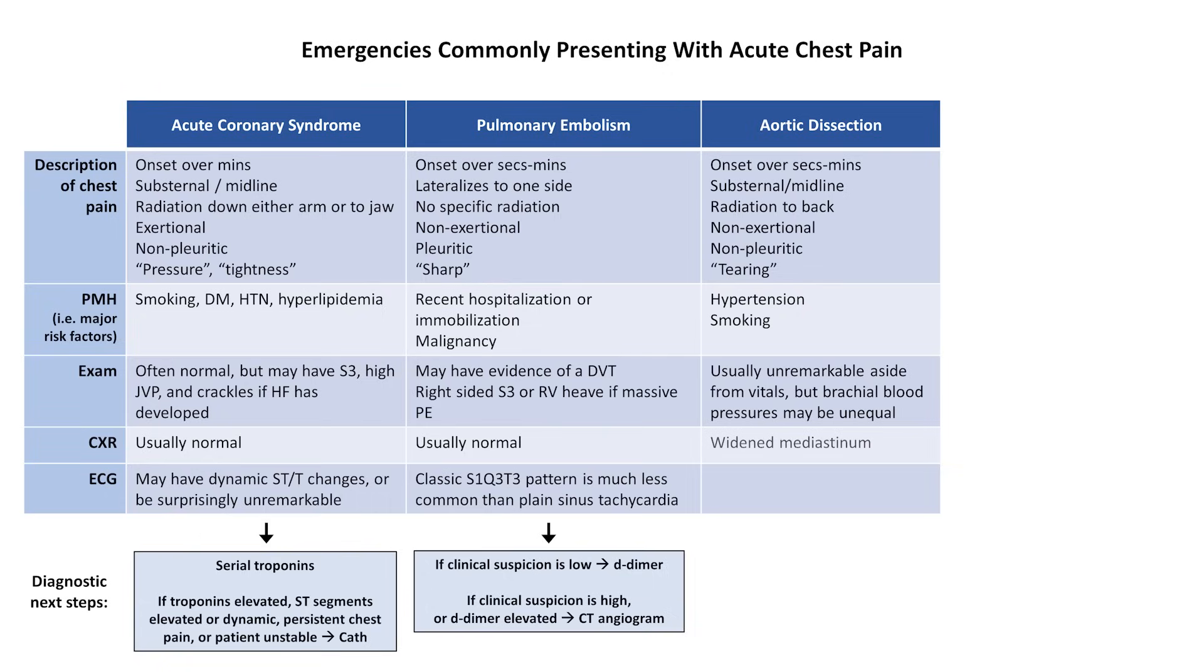A chest x-ray might show widening of the mediastinum, but this is insufficiently sensitive or specific to be clinically helpful. ECG is not at all helpful in making this diagnosis. If a dissection is suspected and the patient is sufficiently hemodynamically stable, a CT angiogram should be performed. If the patient is too unstable to leave the emergency department for the scan, an emergent transesophageal echocardiogram can be performed at the bedside.